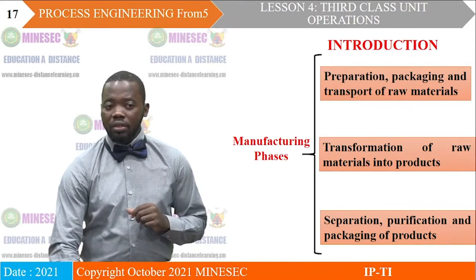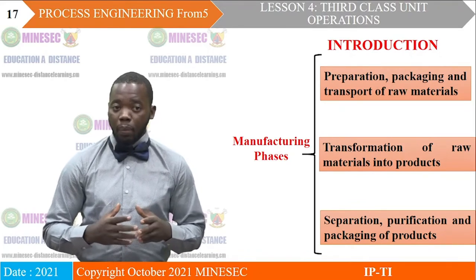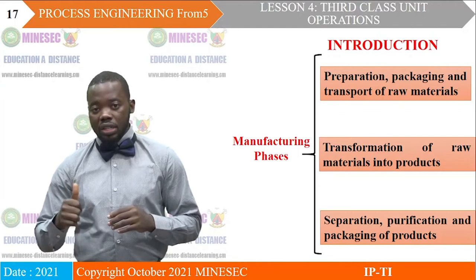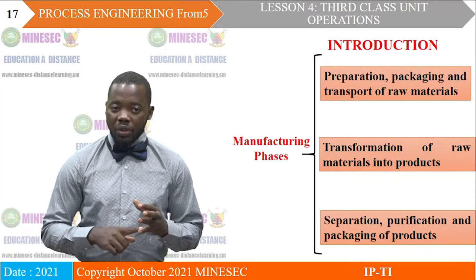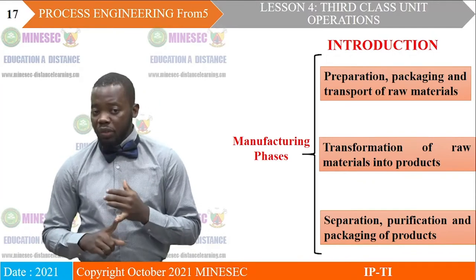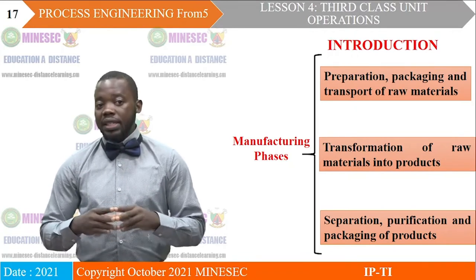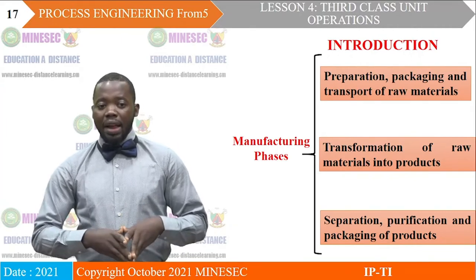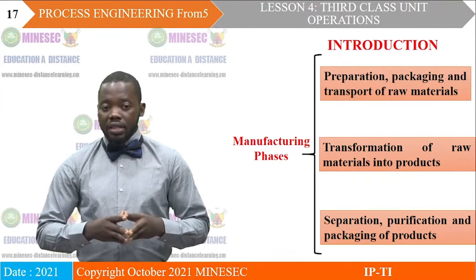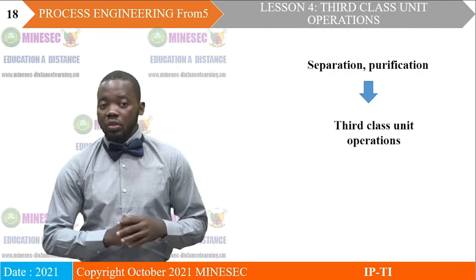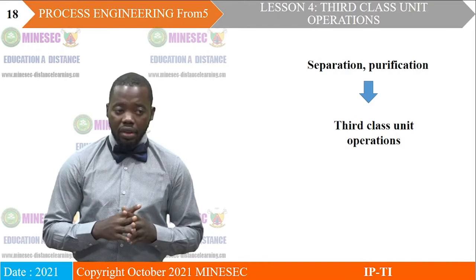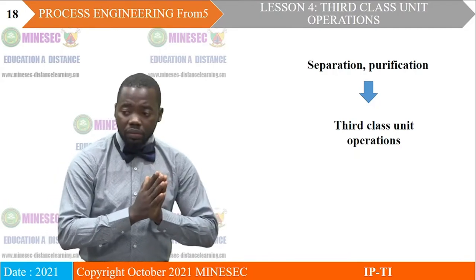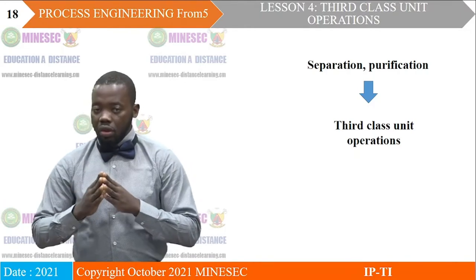We are going to recall manufacturing phases. We saw that we have three manufacturing phases: preparation, packaging, and transport of raw material, associated with first-class unit operations. We also saw transformation of raw materials into products or semi-finished products, associated with second-class unit operations. The third phase — which is separation, purification, and packaging of products — will be associated with third-class unit operations. Therefore, when we hear third-class unit operation, we must keep in mind that it deals with the separation and the purification of the product.